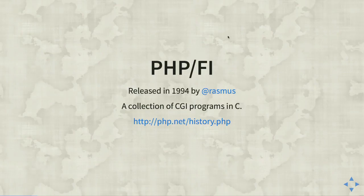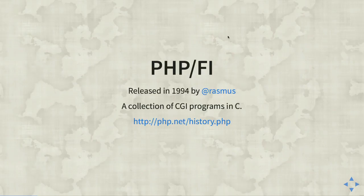We'll start with a brief history lesson. The first version of PHP was PHP/FI, released in 1994. It was basically a collection of CGI programs in C so that Rasmus Lerdorf could manage his homepage and handle form input. From the beginning, PHP was never a designed language — there was no formal spec first, unlike Python or Ruby. It grew organically based on need; if someone needed to do something, they'd add some functions and build a light integration layer with C.